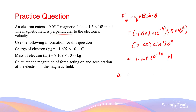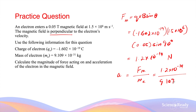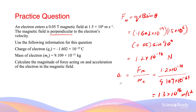The acceleration due to this force can be worked out by dividing the magnitude of the force by the mass of the electron: 1.2 × 10⁻¹⁴ divided by 9.109 × 10⁻³¹, which gives us 1.3 × 10¹⁶ meters per second squared. Because the velocity of the charge is perpendicular to the magnetic field, the electron will undergo uniform circular motion. So the magnetic force here is also the centripetal force, and the acceleration we worked out is also the centripetal acceleration.